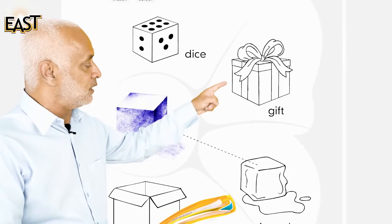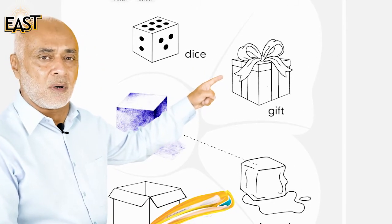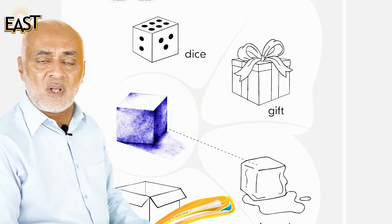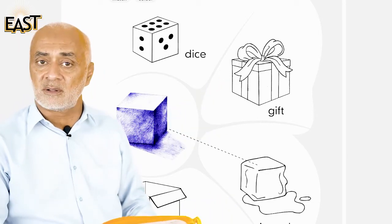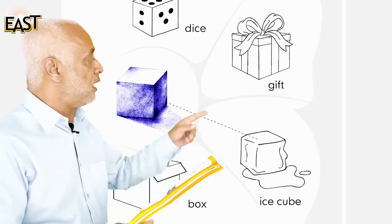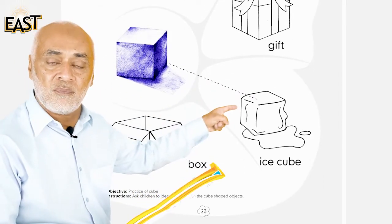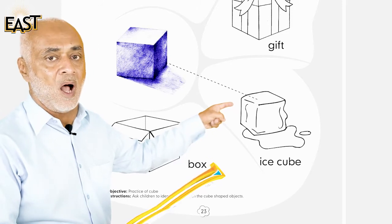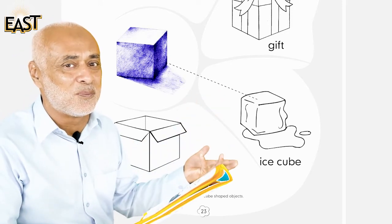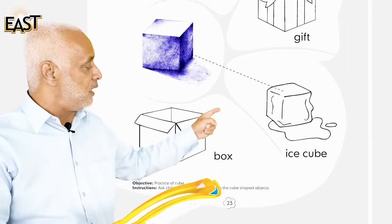And what is this? This is a gift box. A gift box is also a cube. And then we have the ice cube. The ice cube is a cube.